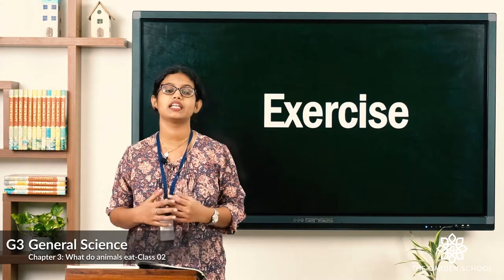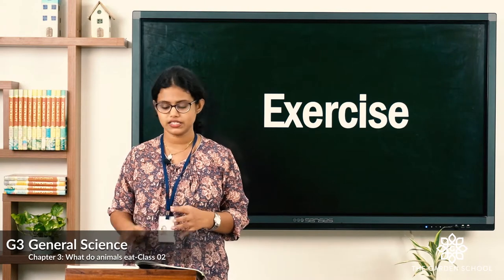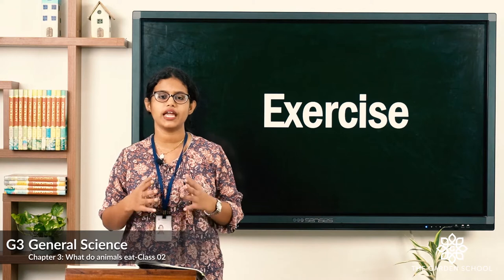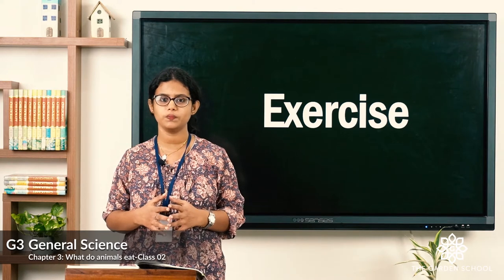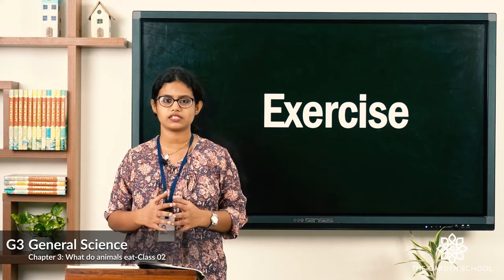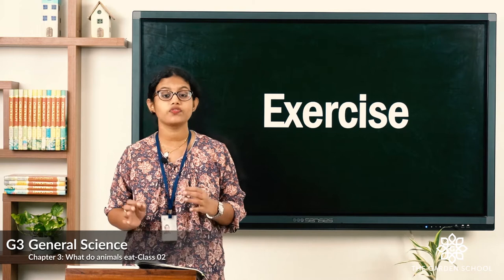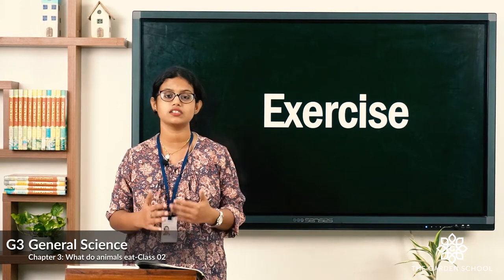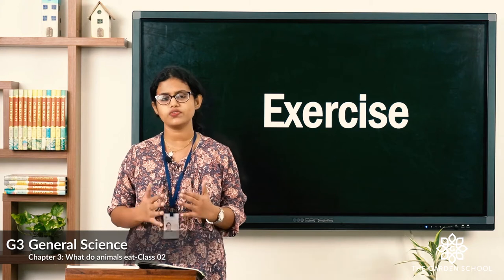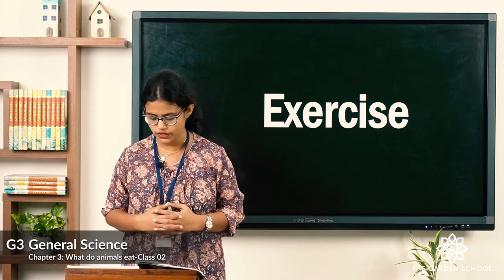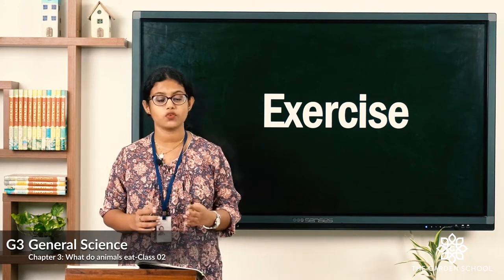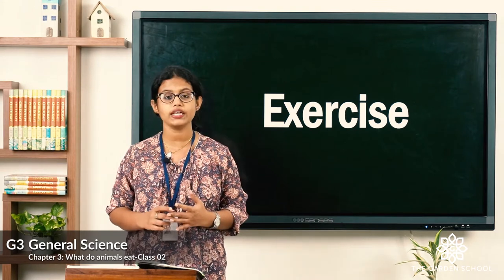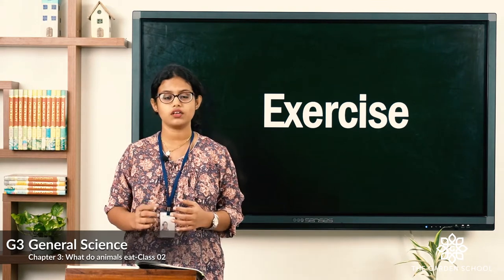Now let's move on to the exercise. Take page number 31 in your textbook and start with the first exercise — five questions with options. The first question: cows are — options are herbivorous, carnivorous, gnawing animals, or powerful hunters.